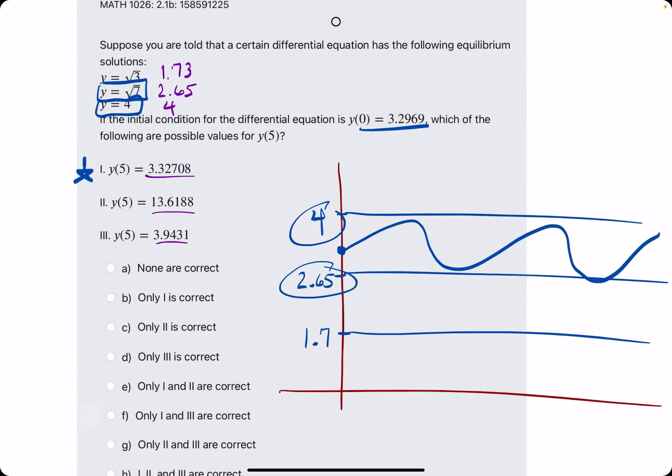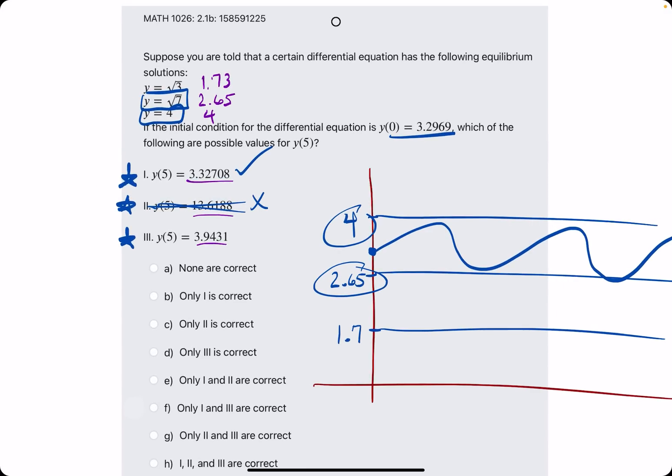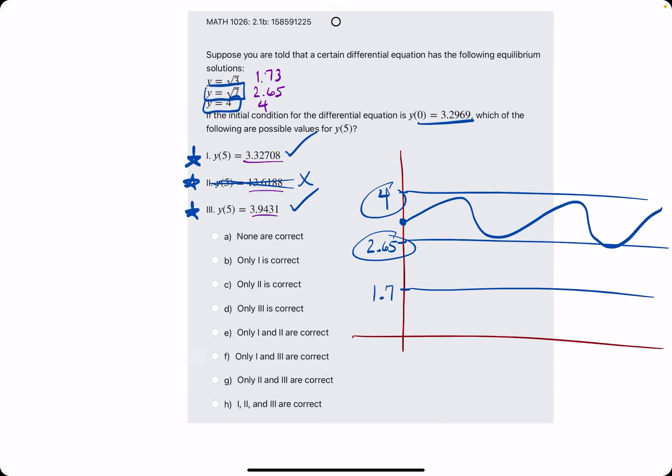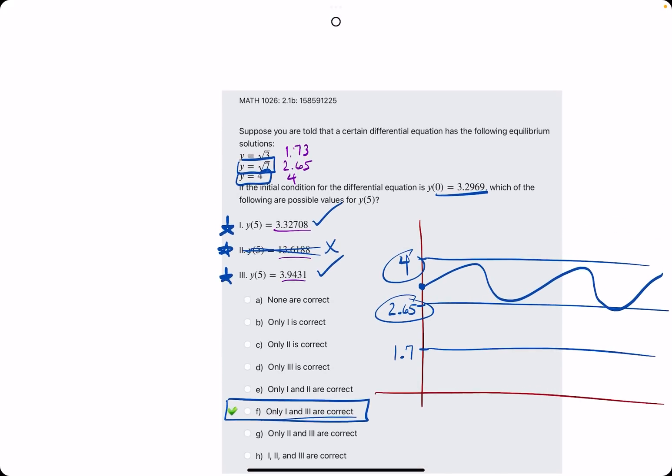3.3 checks out. So 1 is correct. Number 2, 13 is just ridiculously high. That is not between our two values. And then the 3.94 is very close to 4, but it's still less than 4, which satisfies what we're looking for. So we are finding the answer with 1 and 3 being correct. Break out the eraser to see that F is our answer.